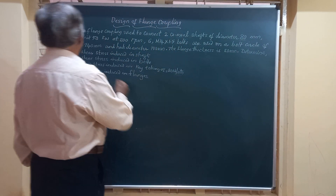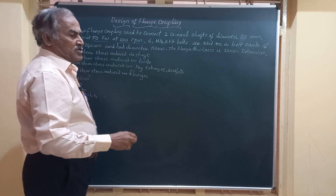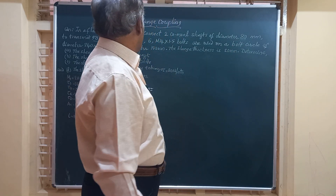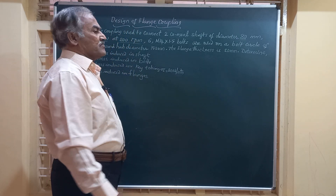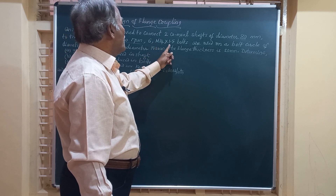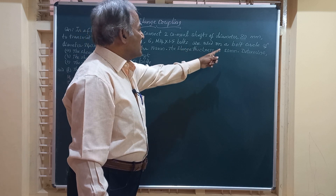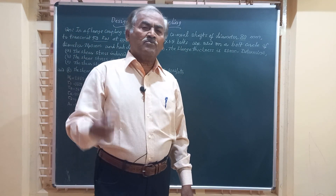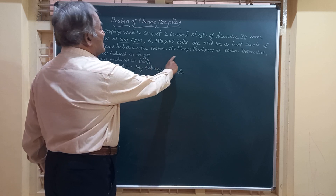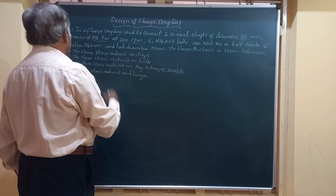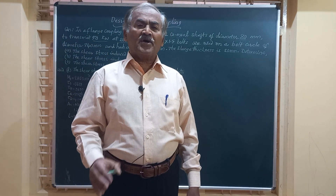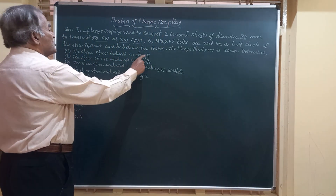to transmit 50 kW at 200 rpm. So there is a flange coupling used to transmit power of 50 kW at 200 rpm, and there are six number of bolts of M14 × 1.5 used on a bolt circle diameter of 240 mm. The bolt circle diameter, the number of bolts, the thickness of the flange, and the hub diameter are all given.